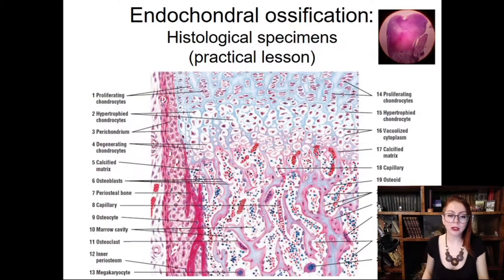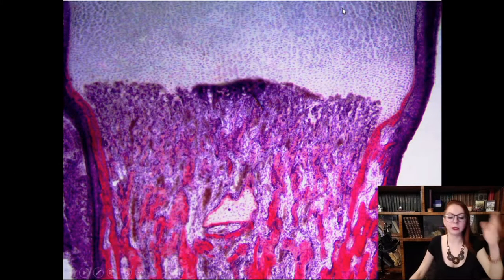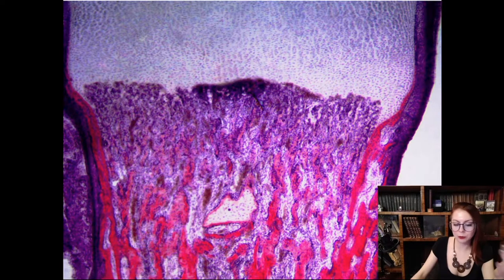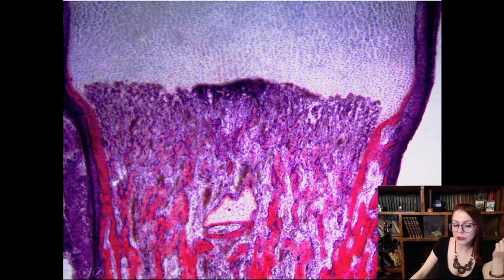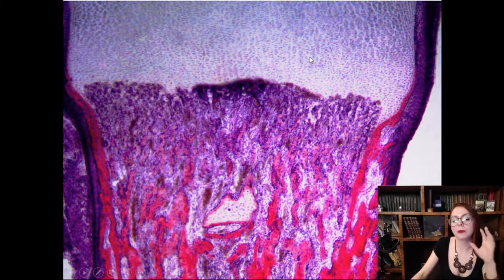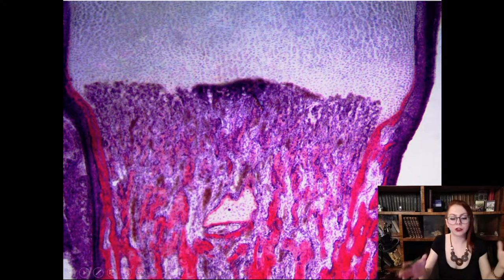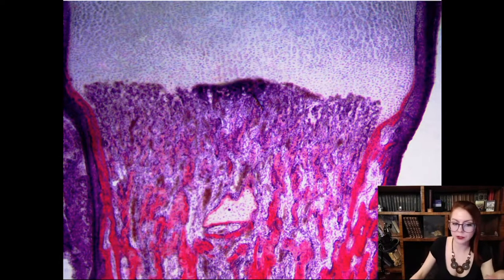Looking at the endochondral ossification specimen, we can see the epiphysis made up of hyaline cartilage, the diaphysis made up of primary (woven) bone tissue with eosinophilic bone trabeculae (collagen present but calcium salts not yet deposited). On the surface of trabeculae are osteoblasts; inside are osteocytes. Osteoclast cells can also be identified. The primary ossification center has already formed while the secondary ossification center hasn't appeared yet — the epiphyseal plate zones are not yet formed.